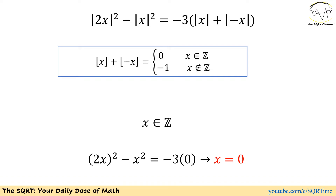Now let's assume that x is not an integer. For example, assume x is 1.5. Then floor of x is floor of 1.5, which is 1. On the other hand, floor of negative 1.5 is negative 2. Adding them gives negative 1. Now let's try a negative number: assume x is negative 1.5. Then floor of negative 1.5 is negative 2, and floor of negative x is floor of 1.5, which is 1. Adding them again gives negative 1. So floor of x plus floor of negative x equals 0 for integer x, and negative 1 for non-integer x.